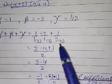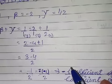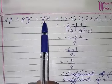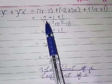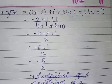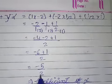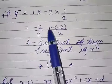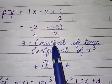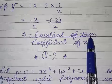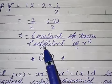Sum of roots is minus b upon a — that is minus 1 upon 2, where 1 is the coefficient of x square and 2 is the coefficient of x cube. Now the sum of the product of roots: if you find it, you will get minus 5 upon 2, which equals the coefficient of x divided by the coefficient of x cube. The product of all zeros — alpha into beta into gamma — gives minus 2, which equals minus constant term upon coefficient of x cube.